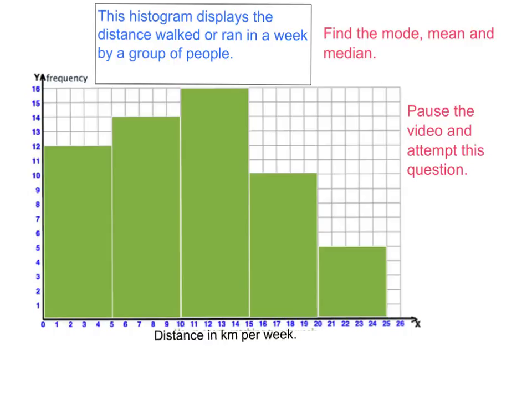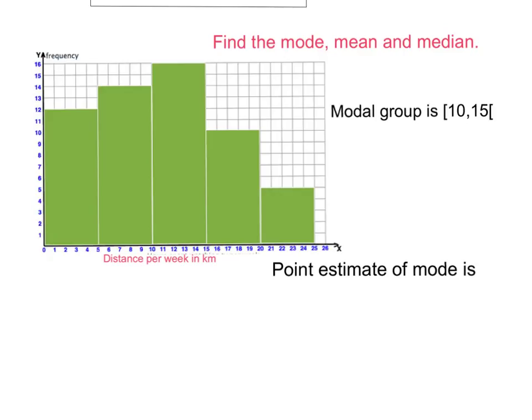Study this histogram and attempt this question. Find the mode, mean, and median for this set of data. Please pause the video and attempt this question before you replay. Let us start with the easiest one. That is the mode. The modal group is between 10 and 15 because this is the group with the highest frequency, 16. That's the tallest bar.